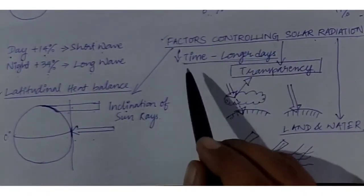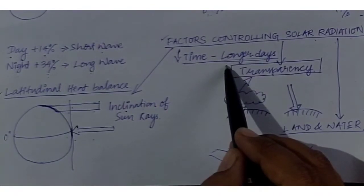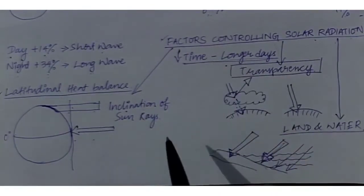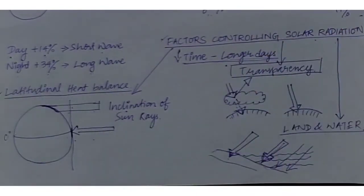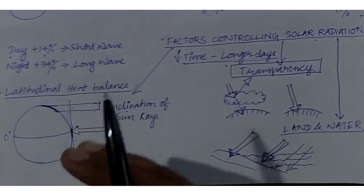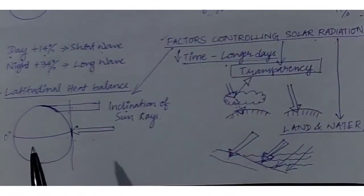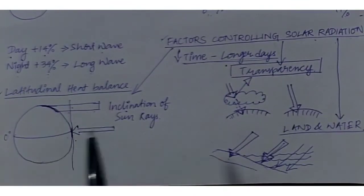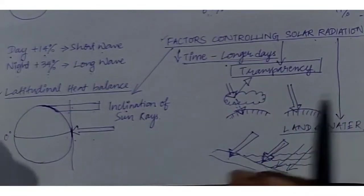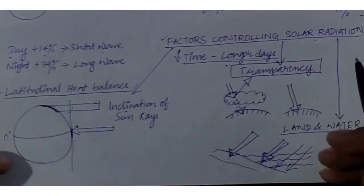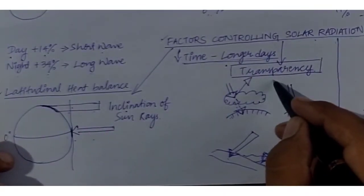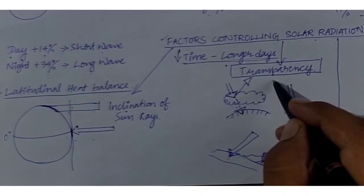The next factor is time. During summers we have longer days and shorter nights, and during winters we have longer nights and shorter days. When we are exposed to the sun for more time, we receive more insolation. The longer we face or are exposed to the sun, the more solar radiation we receive, and the shorter the time, the less radiation — it is as simple as that.